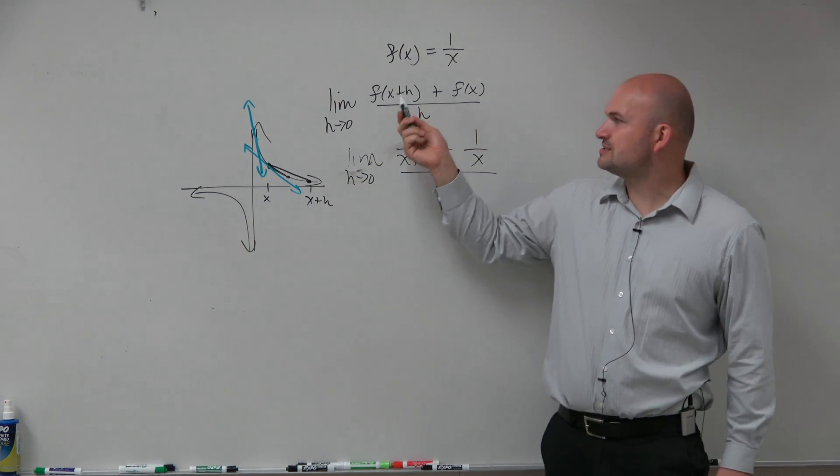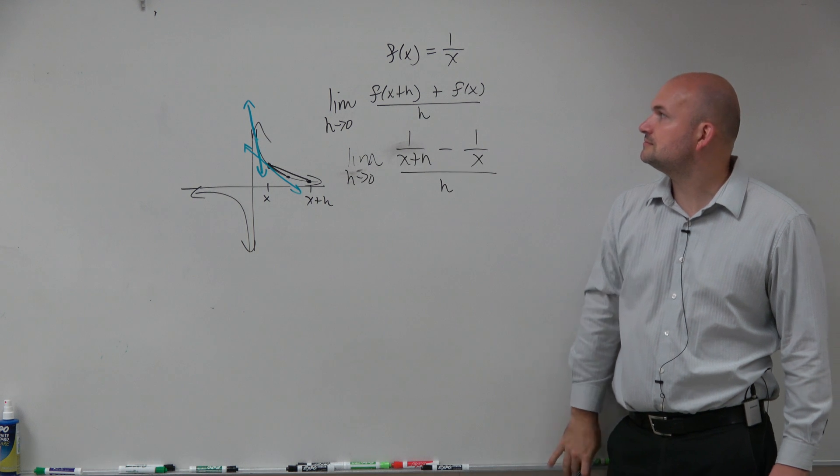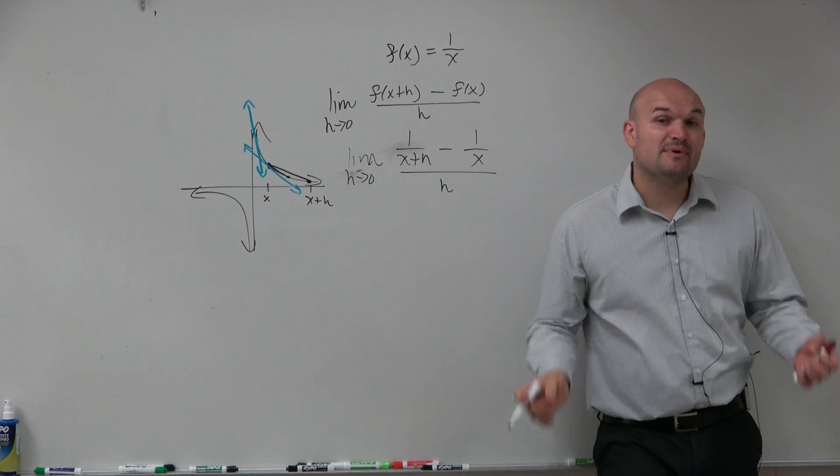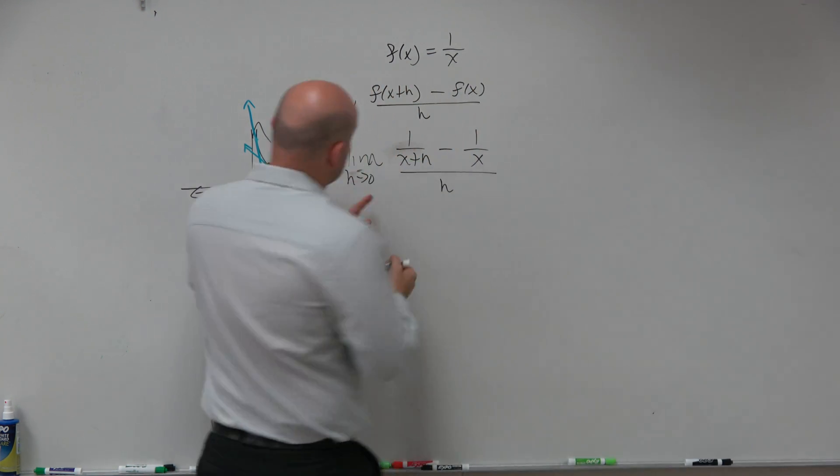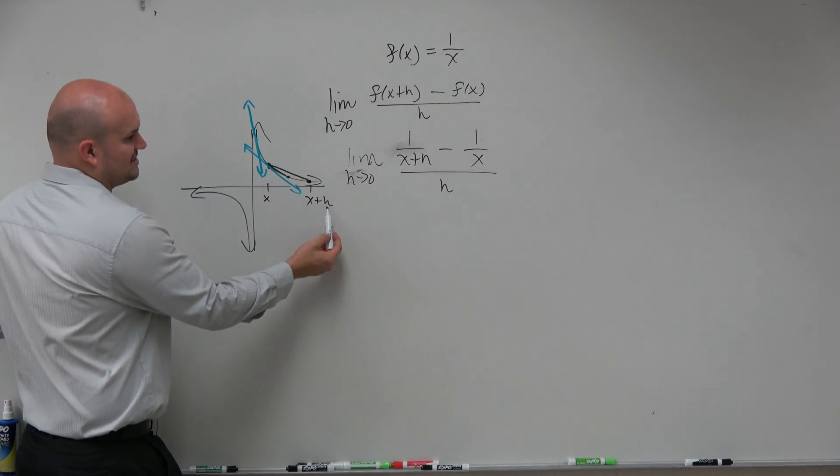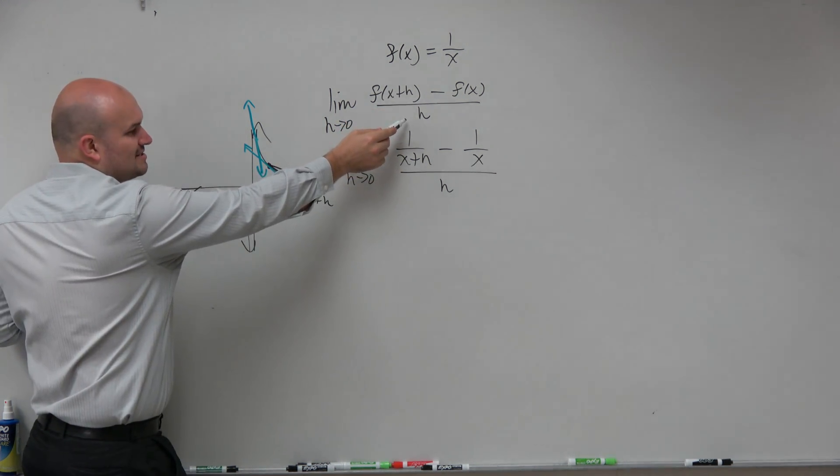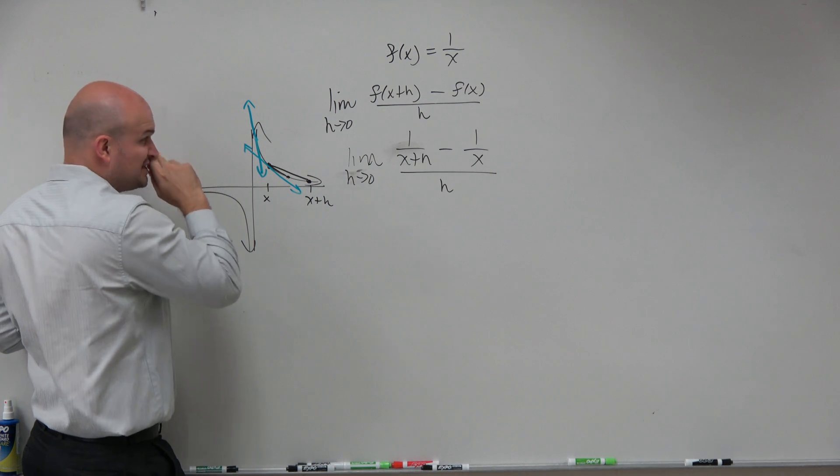And again, remember guys, that's subtraction. Remember, it's the slope formula, basically. If you guys remember, you're subtracting x plus h minus x, and you're subtracting these, and then x plus h minus x, and the x's subtract out, that's why we're just left with h.